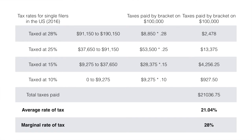For the third column, we can see the taxes paid by each bracket for someone earning $100,000. In the lower brackets — 10%, 15%, and 25% — the income earner is paying tax on the full range of those brackets. However, at the 28% range, they are only paying tax on $8,850, which is the difference between $100,000 and the lower limit of the bracket.